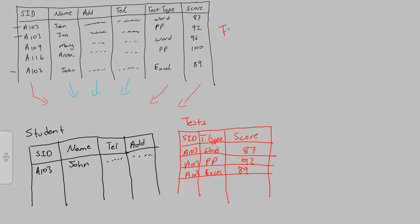The original single table is known as a flat file — one database with everything inside. This new approach is a relational database. When we see the number A103, the only way we know who that person is, is if we link the student ID column in the tests table with the student ID column in the student table. To do that we create what is known as a relationship, linking those two — and that's our relationship.